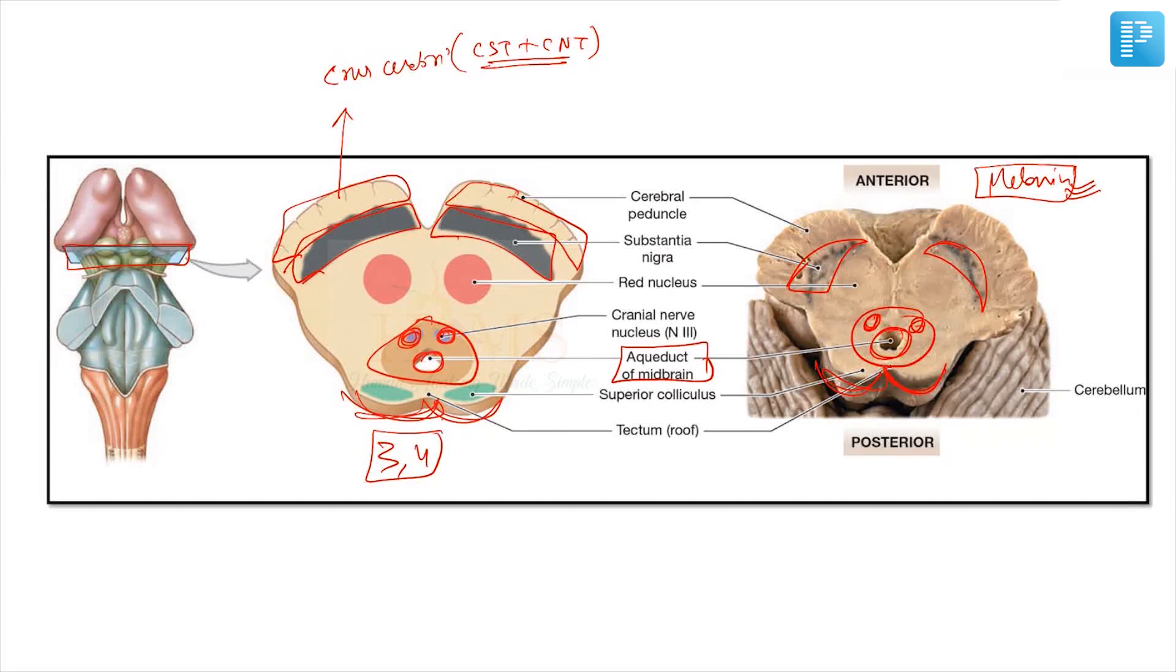It depends: superior colliculus you will see the oculomotor nucleus, and inferior colliculus you will see the trochlear nucleus. There is one more nucleus seen which is red nucleus. Red nucleus is in the upper midbrain, and because it is upper midbrain, it must be the superior colliculus level. That is where you have oculomotor nerve also, because you have red nucleus.